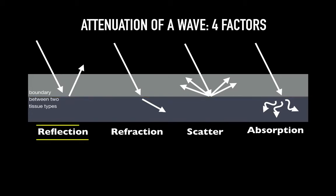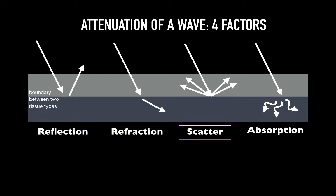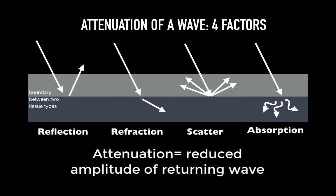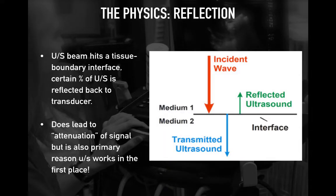At tissue boundaries, sound waves can be reflected directly back — much like light off a mirror — which is the primary interaction generating a B-mode image. They can be refracted, like light passing through a prism resulting in directional change. They can be scattered, sending sound waves off in all directions; small structures less than one wavelength in lateral dimension result in scattering with little signal return to the transducer. Finally, absorption — the sound wave is lost and converted to heat, as happens extensively in bone. Although reflection is one factor in attenuation, it is the core principle that generates the B or 2D mode image.